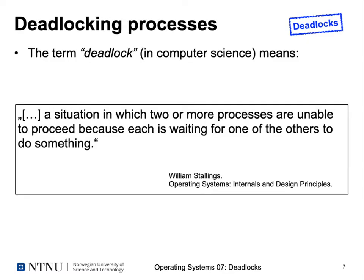So what is a deadlock? In computer science, a deadlock is defined as a situation in which two or more processes are unable to proceed because each of these processes is waiting for one of the others to do something. Because all processes are waiting simultaneously, none of them can proceed — all of them are actually blocked. This definition is from Stallings.